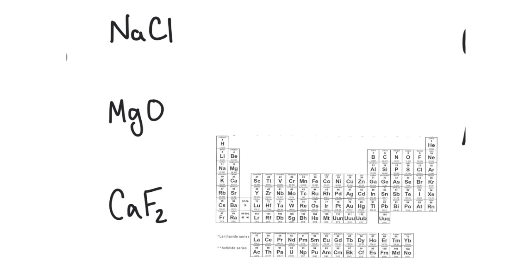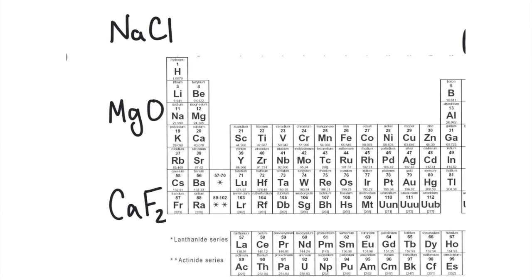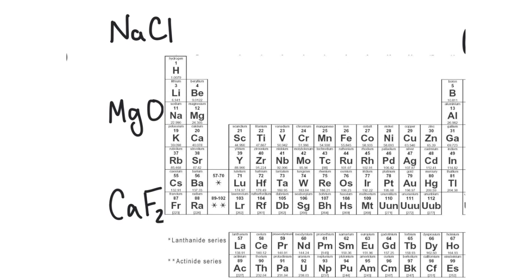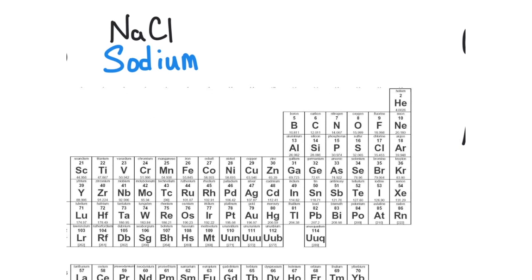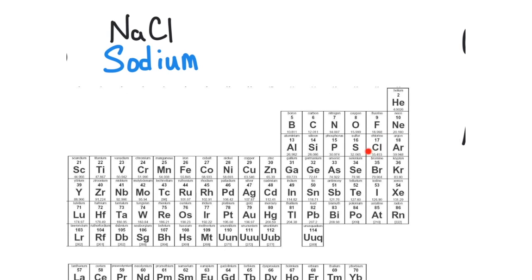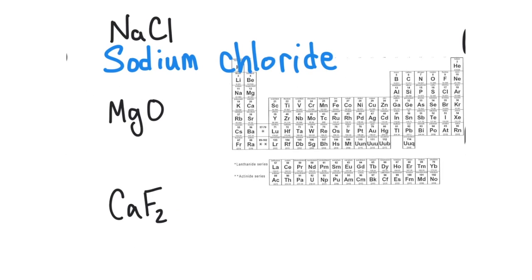The first example is NaCl. Looking at the periodic table, Na is sodium — that's our cation. Cl is chlorine, and we change the ending to get chloride. So the name is sodium chloride. These simple binary compounds are the easiest ones to name.